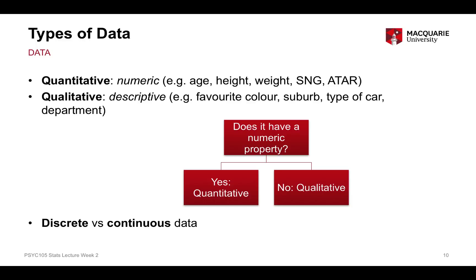We can also have discrete or continuous data. Discrete data is in individual groups or categories, whereas continuous data can be at any point on a particular scale. For example, the year of school a child is in — kindergarten, year one, year two, up to year 12 — is discrete, because you can't have year 1.2 or 1.35. On the other hand, temperature in Celsius is continuous because you could have 13.25673 degrees, which is a valid observation. Discrete data are in distinct categories, while continuous data can be at any point on a scale.